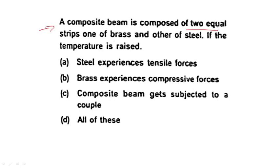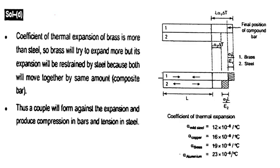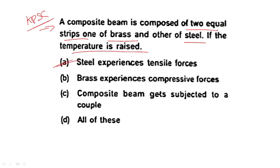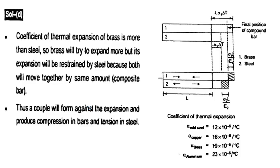Next question: A composite beam composed of two equal strips — one brass, one steel — when temperature rises: steel experiences tensile forces, brass experiences compressive forces, and the composite beam is subjected to a couple. All options are correct. This was explained with a sketch earlier — please rewind if you missed it.